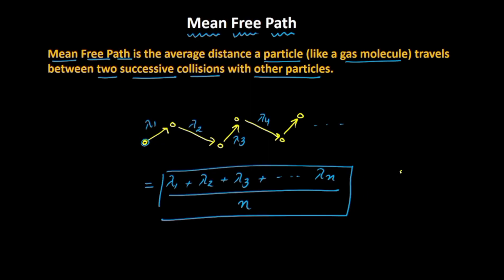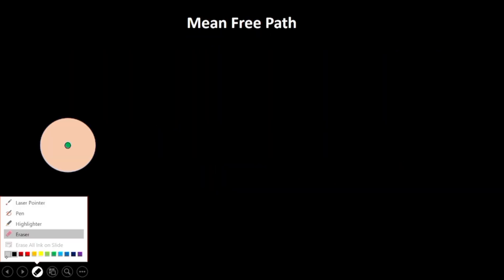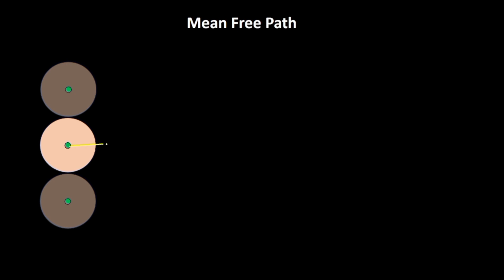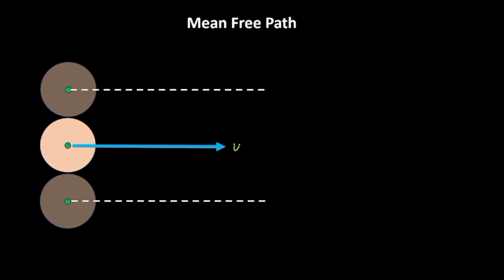Let's understand how we derive an expression to find the value of lambda. We have a gas molecule where the green dot represents the centre of this gas molecule — we can also consider it as the centre of mass. The radius of this gas molecule is d/2, so the diameter is d. This gas molecule is going in a straight direction with velocity v and it just passes two gas molecules, number 1 and 2, sliding off them. We assume gas molecules 1 and 2 are stationary.